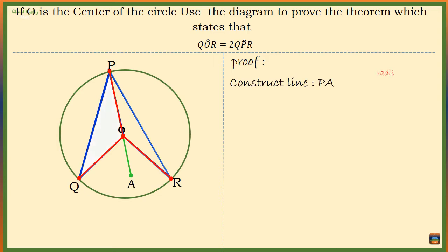Let's concentrate on triangle POQ. OP is a radius of the circle, and so is OQ. That means OP and OQ are equal in length, which makes triangle POQ an isosceles triangle.